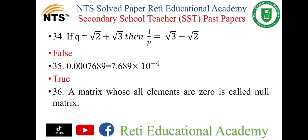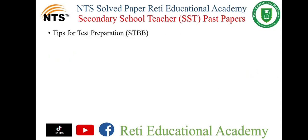Question number 36: A matrix whose all elements are 0 is called a null matrix. And it is true.